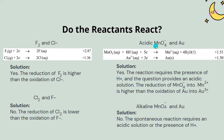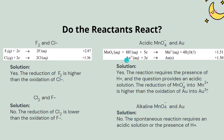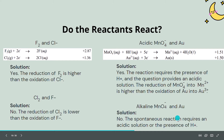Do acidic permanganate and gold react? Yes — the reaction requires the presence of hydrogen ions, and the equation provides an acidic solution. The reduction of permanganate into Mn2+ is higher than the oxidation of gold into Au3+. Do alkaline permanganate and gold react? No — the spontaneous reaction requires an acidic solution or the presence of hydrogen ions.